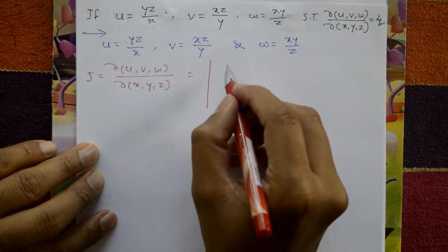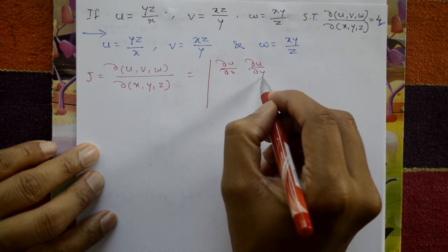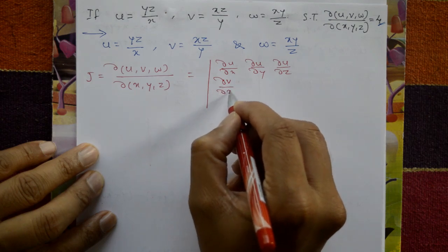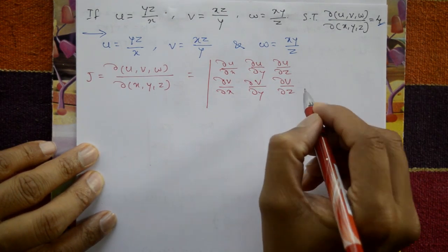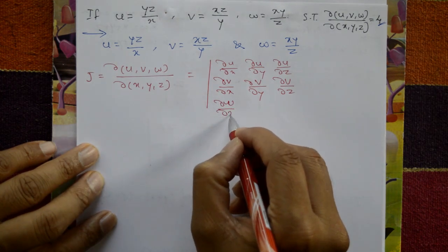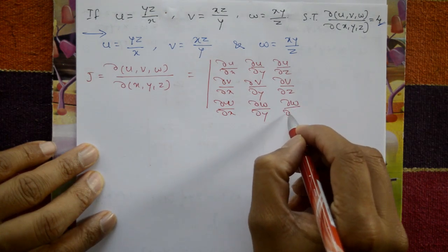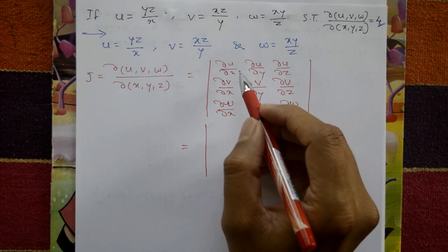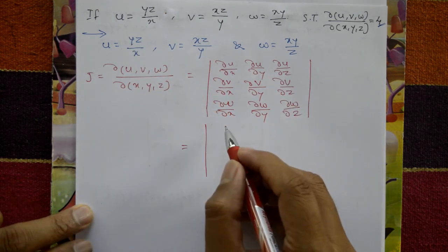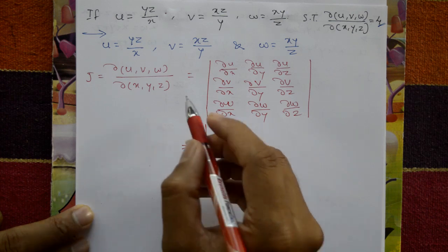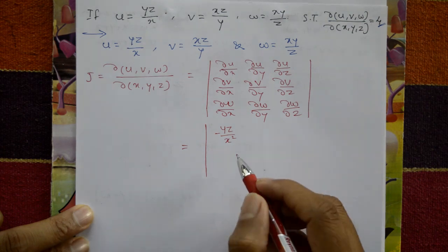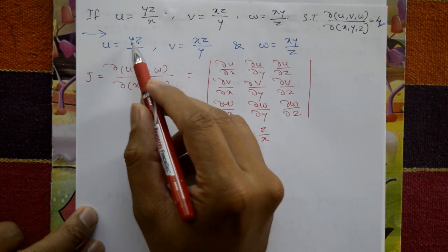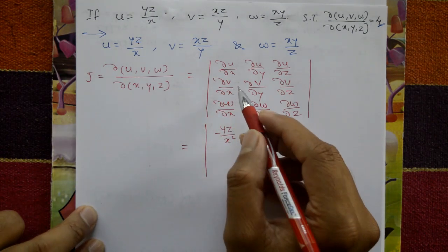First row: ∂u/∂x, ∂u/∂y, ∂u/∂z. Second row: ∂v/∂x, ∂v/∂y, ∂v/∂z. Third row: ∂w/∂x, ∂w/∂y, ∂w/∂z. Differentiate u with respect to x: yz is constant, so ∂u/∂x = −yz/x². With respect to y: z/x. With respect to z: y/x. Very simple differentiation.